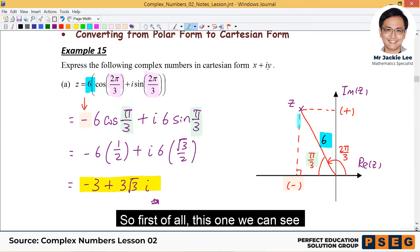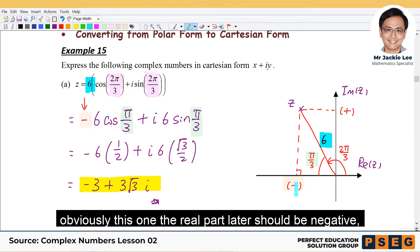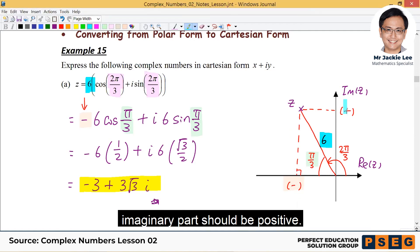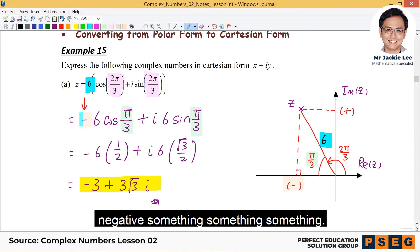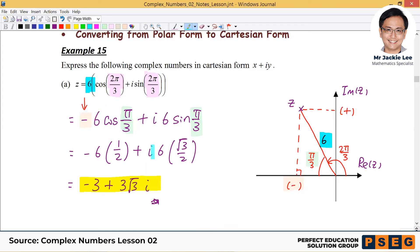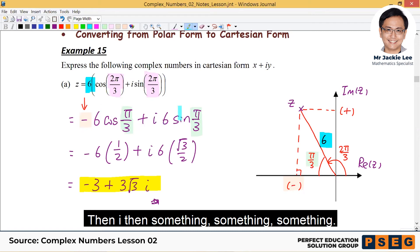So, first of all, this one you can see obviously, this one the real part later should be negative. Imaginary part should be positive. So this one, I think, quite easy one actually we can settle first. So the real part in front, you put negative first. Negative something. Then this one positive, then plus. Then i, then something.